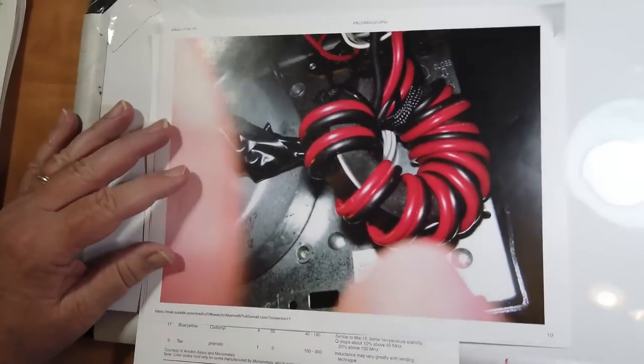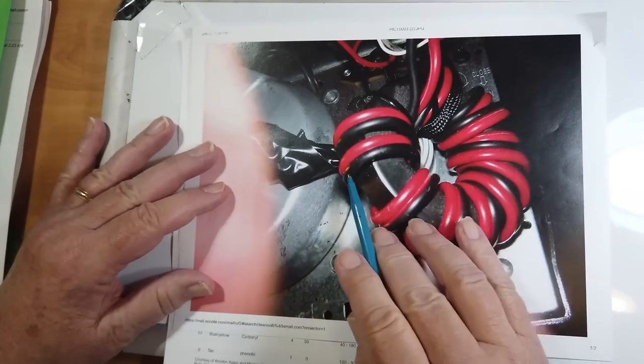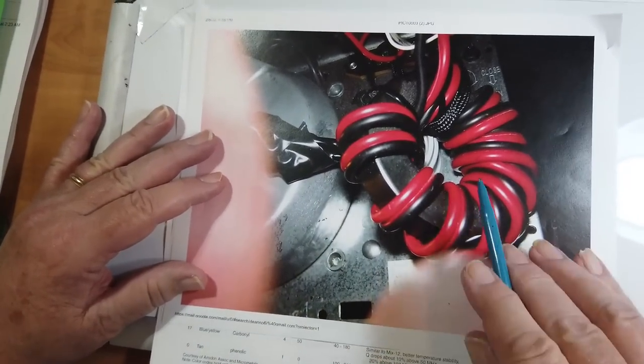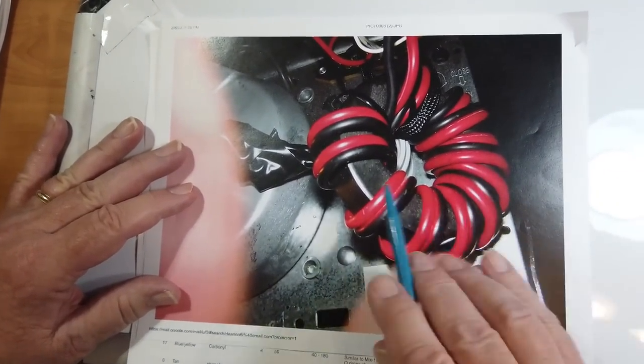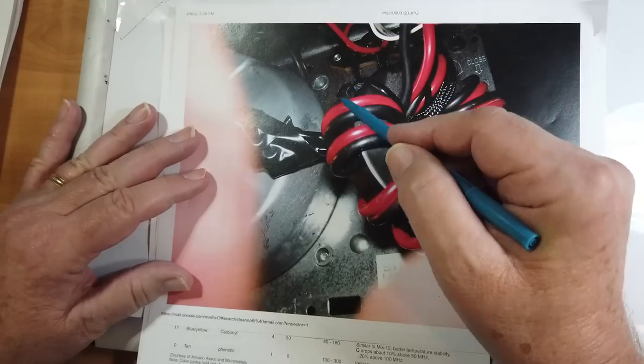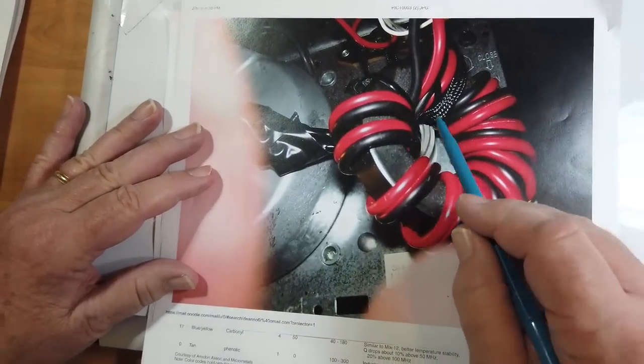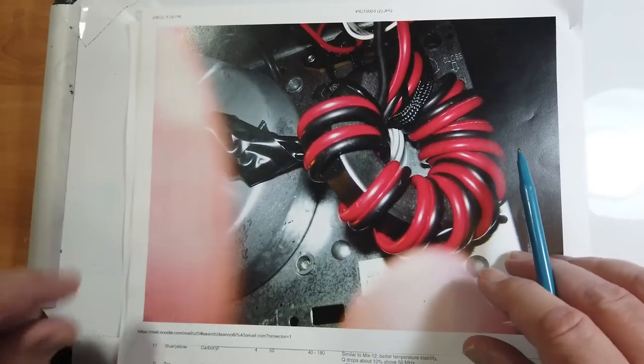This right here, it's inside the garage door opener, and this is the main power coming in. And notice that he has it wound around the toroid together. Okay, and here's the toroid right here, and here's the back edge of it. It's flat, sort of like a hockey puck, but it's got a hole in the middle.